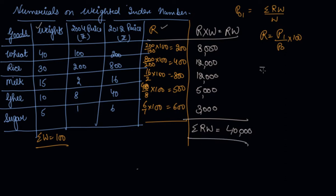Now let's put the values into the formula. Sigma RW is 40,000 and sigma W is 100. So we get 400 as your price index. The price index for the current year with base year 2004 is 400.